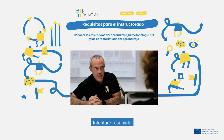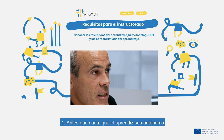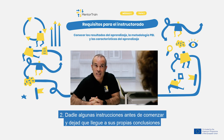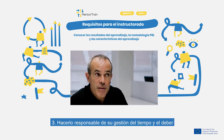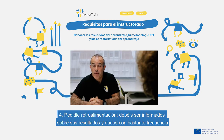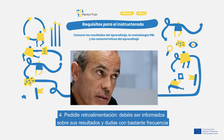Okay, I will try to summarize. First, let the apprentice be autonomous. Second, give him some instructions and let him reach his own conclusions. Third, make him responsible for his time and duty management. Fourth, ask him for feedback — you should be informed about his results and doubts quite often.